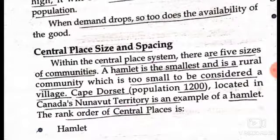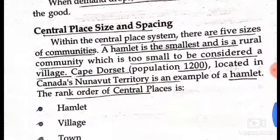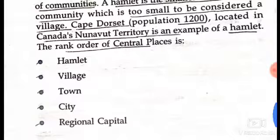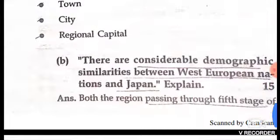Within the central place system, there are five sizes of communities. A hamlet is the smallest — it is a small community too small to be considered a village. For example, a hamlet located in Canada's Northwest Territory. The rank order of central places is: hamlet, village, town, city, and regional capital.